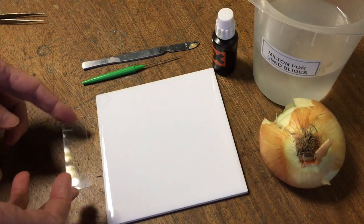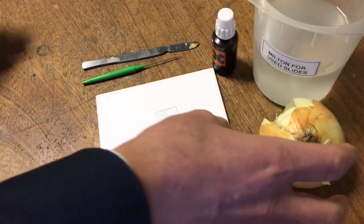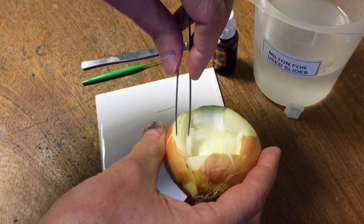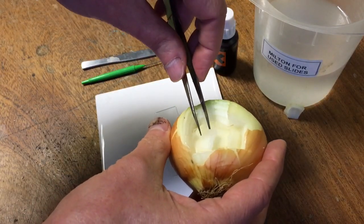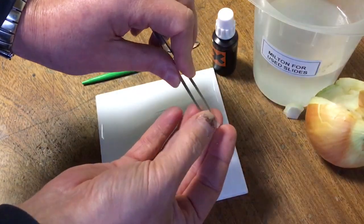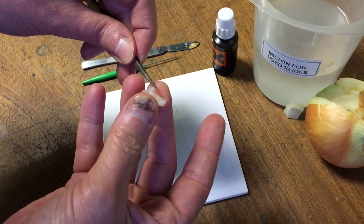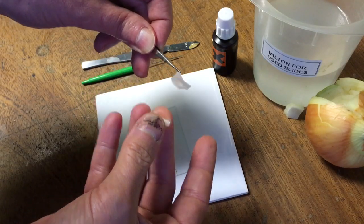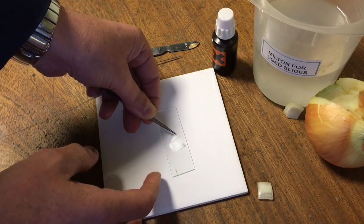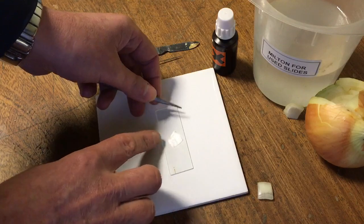Preparation of an onion cell slide. Here I have a clean glass slide that I'm going to prepare to view under the microscope. I'm going to take a piece of tissue from this onion and remove the thin layer of tissue on the back of this section, taking care to keep it flat and lay it smoothly out on the glass slide.